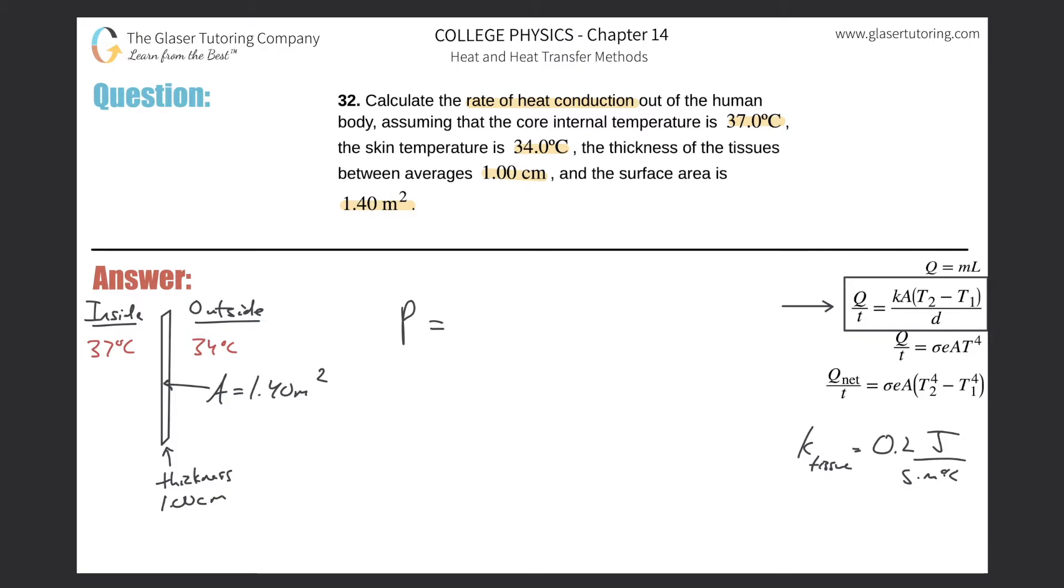If they ask you for the rate of heat conduction, that's literally what they're asking for: power. So this equals the thermal constant multiplied by A, multiplied by the temperature difference between the two locations, divided by the distance between those two locations. So distance is usually a thickness here.